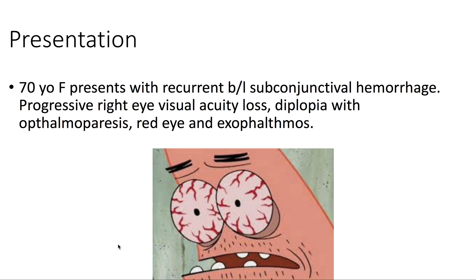Presentation: we have a 70-year-old female presenting with recurrent bilateral subconjunctival hemorrhages. The patient has had progressive right eye visual acuity loss, diplopia with ophthalmoparesis, red eye, and exophthalmos.